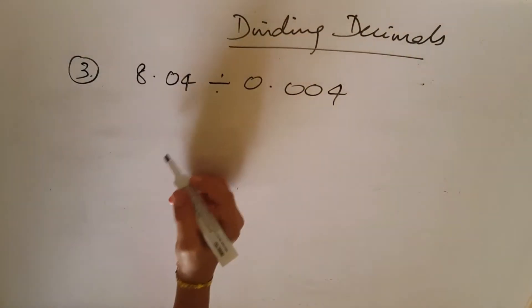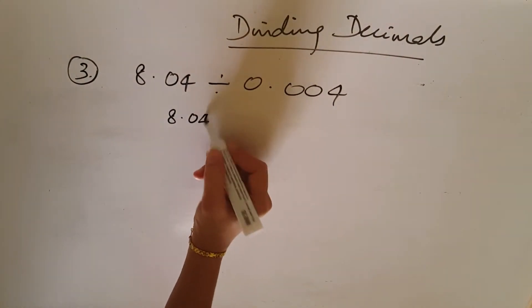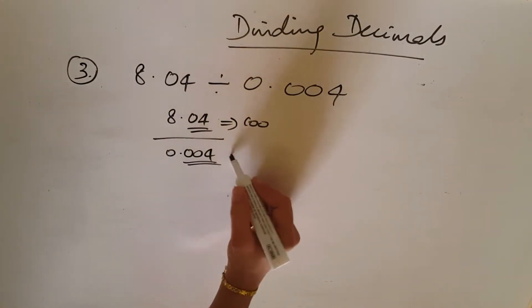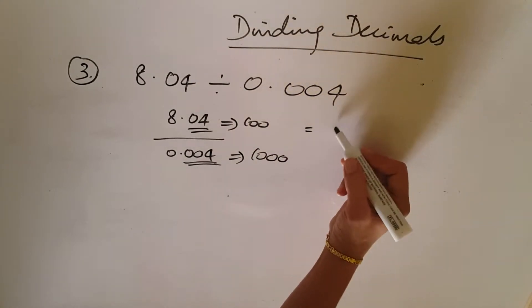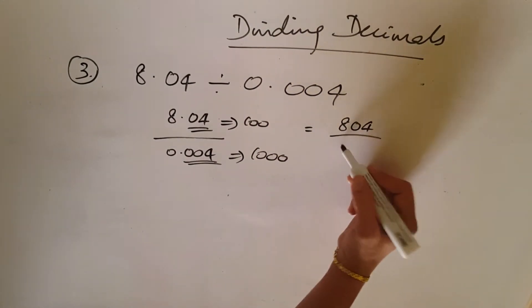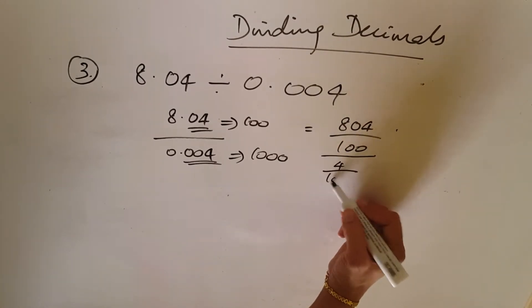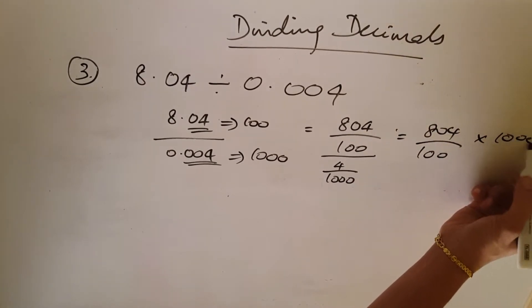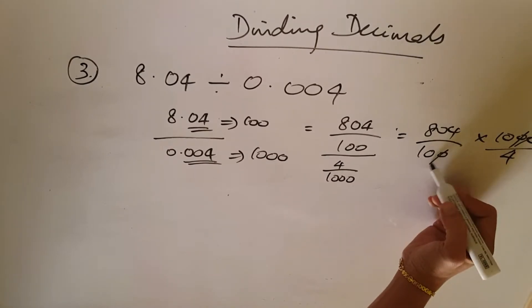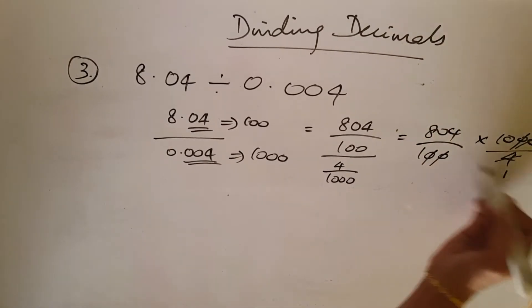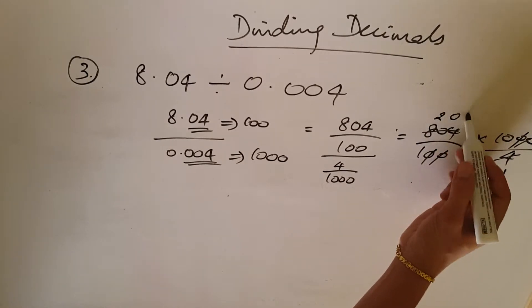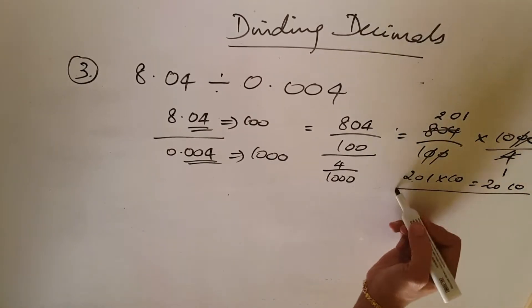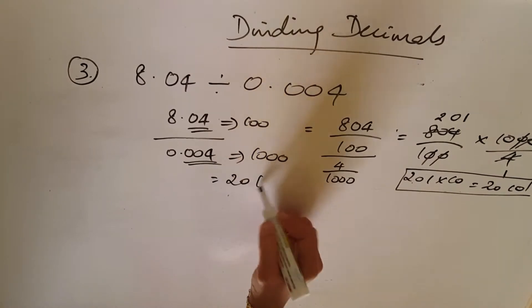Next: 8.04 divided by 0.004. The numerator 8.04 is at the 100th place, so write 8.04 over 100. The divisor 0.004 is at the 1000th place, so write 4 over 1000. This becomes 8.04 over 100 multiplied by 1000 over 4. Two zeros cancel. Dividing: 1 four is 4, 2 fours are 8, bring down 0 — giving 2010. The answer is 2010.